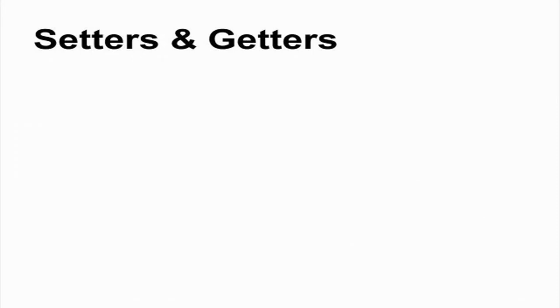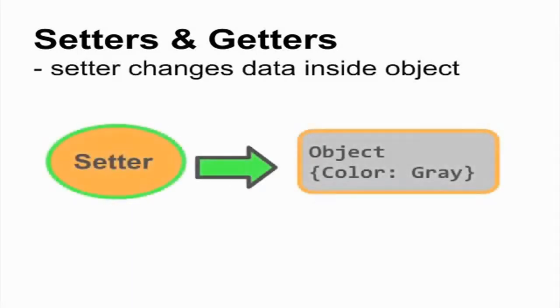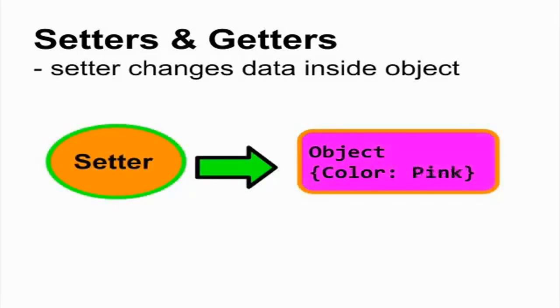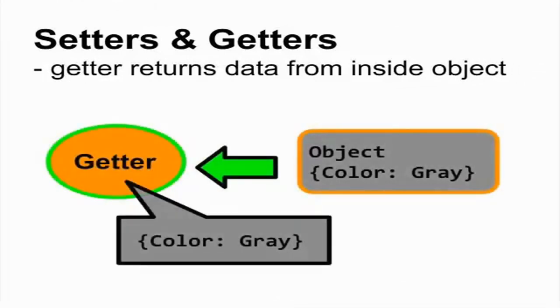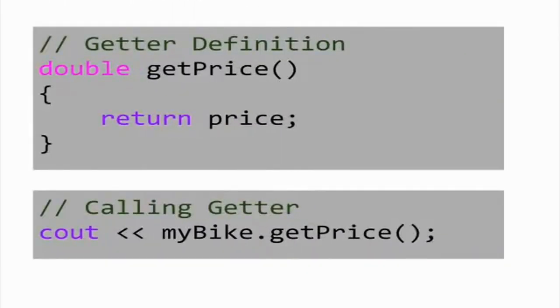Besides constructors and destructors, objects have two other kinds of methods: setters and getters. A setter is a method that changes the data attributes of an object — for example, setPrice will take a floating point number as a parameter and set the price variable to the value passed in. A getter method retrieves the data of an object; it doesn't change an object, but rather lets you peek inside of it. For example, we can give the class a method called getPrice that returns the value inside the price variable.